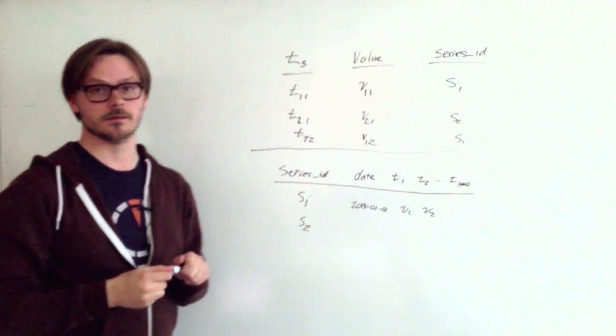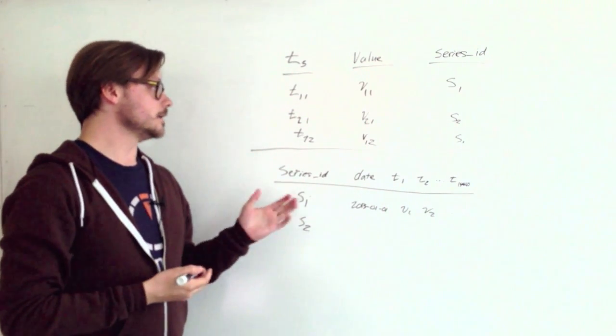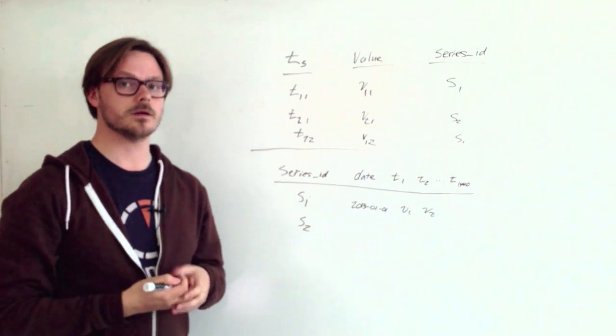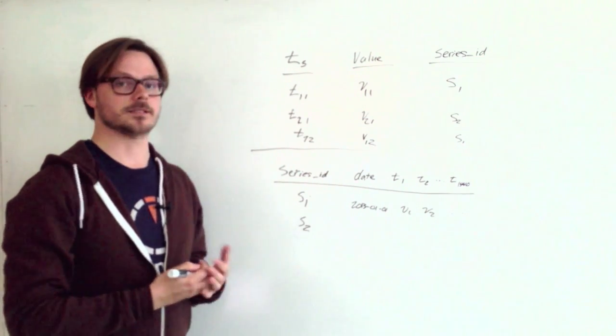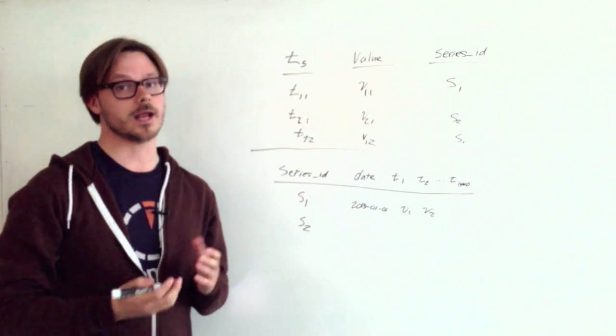Now this is a great optimization. It solves the indexing problem that we had before. The data is growing a lot slower. It's growing one row per series per day. So you don't get into this indexing problem quickly. However, it has a few problems.